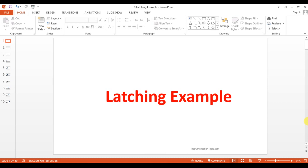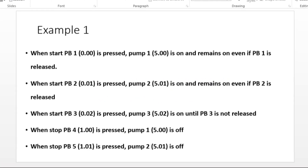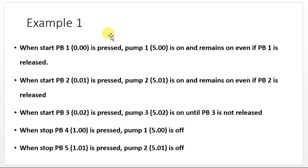Hello everyone, welcome to Automation Community. In this session we are going to see some examples for latching and unlatching concepts using CX Programmer. For latching, let's see example one: when the start push button is pressed, pump 1 is on.